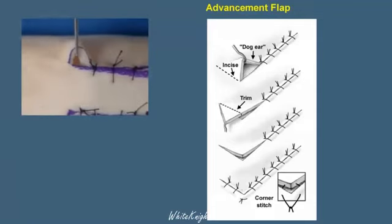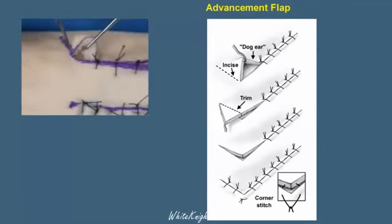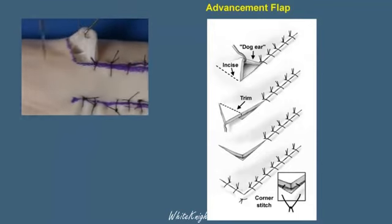A single hook is placed in the dog ear, and the triangle that is formed can easily be seen. It is then marked with a surgical marking pen. An incision is made perpendicular to the skin edge so that we can mark out the point of a triangle.